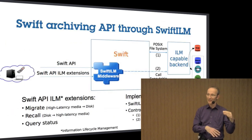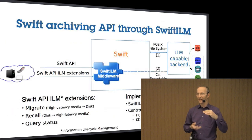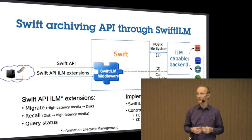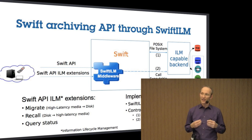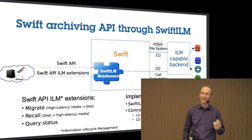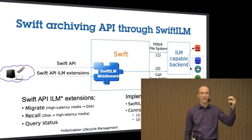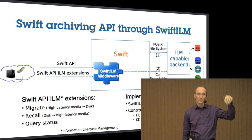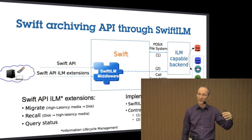There are many different technical aspects, and in the time between the Vancouver Summit and now, we actually focused on what we call the Swift ILM API. We call it Swift ILM because it exposes the API to applications in a way that they can control the information lifecycle management, potentially also supplying rules about when to put the data on tape — not even doing this directly, but probably also doing this in an asynchronous way.